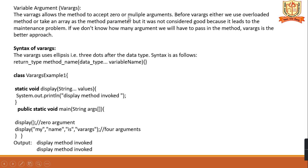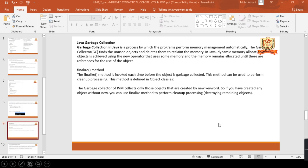Variable arguments (varargs) allow a method to accept zero or multiple arguments. Before varargs, you would use overloaded methods or an array of method parameters, but that was not considered good practice. When the number of arguments is not fixed, you use varargs. Varargs uses three dots after the data type — for example, String... values. The display method can accept multiple string arguments. When three values are passed, the method handles them using varargs. That concludes this first video.